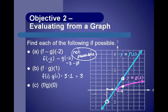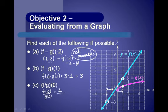f divided by g of 0 means f of 0 divided by g of 0. On the green line where x is 0, the y value is 1, so f of 0 is 1. g of 0 is 0. Since you cannot divide by zero, this example is not possible either.